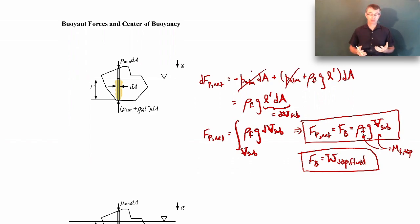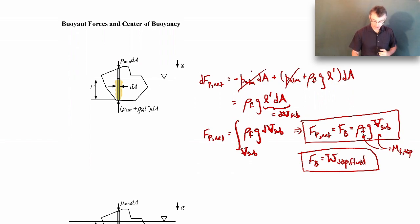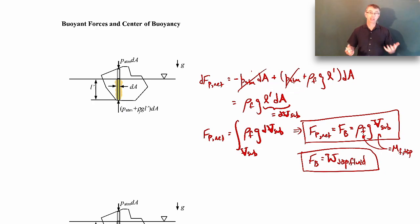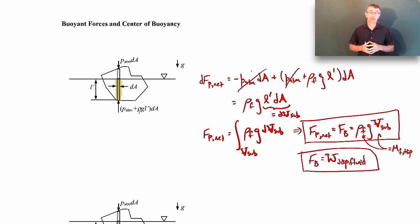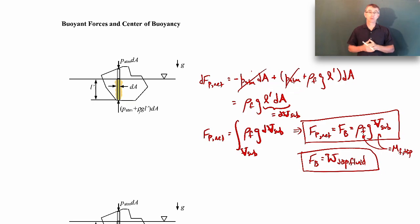The buoyant force, as you can see from this derivation, is really just a net pressure force. What's happening is the pressure on the bottom is larger than the pressure on the top due to the hydrostatic pressure distribution. So when you dive down in the water — say you're swimming — you feel this buoyant force acting up on you because the pressure on the top part of you is a little bit less than the pressure on the bottom, giving a net pressure force pushing you up. That's your buoyant force.